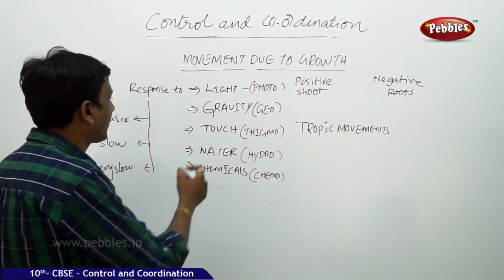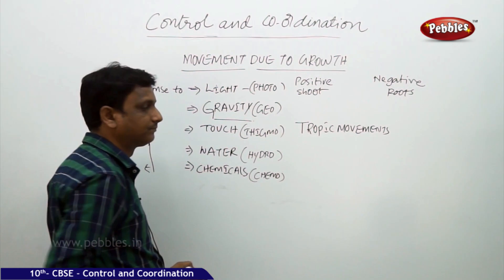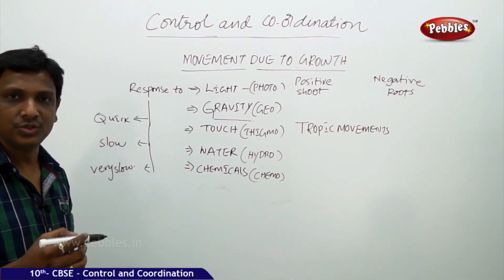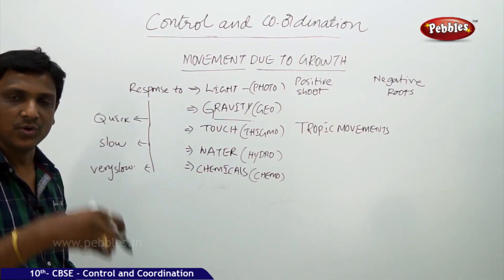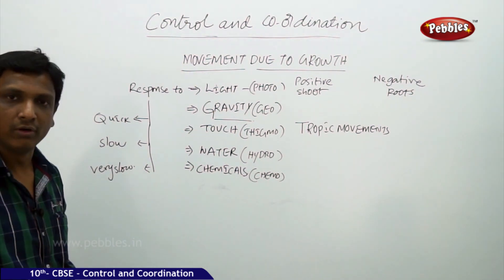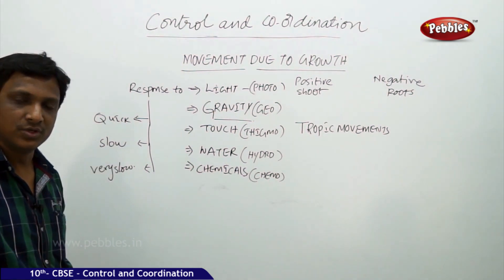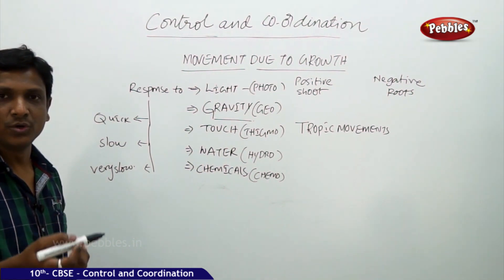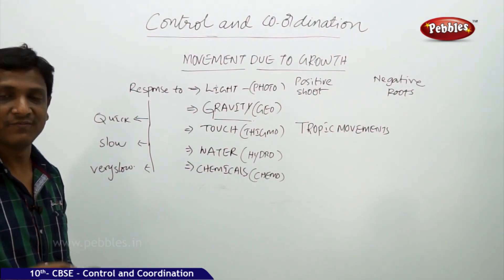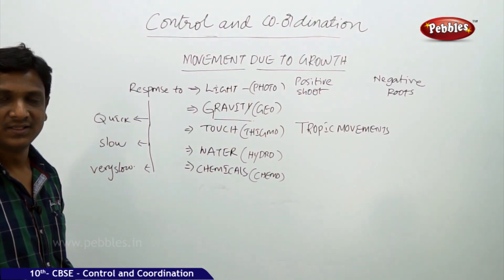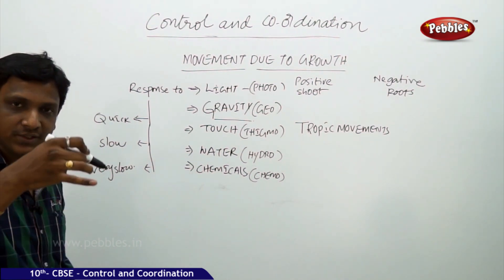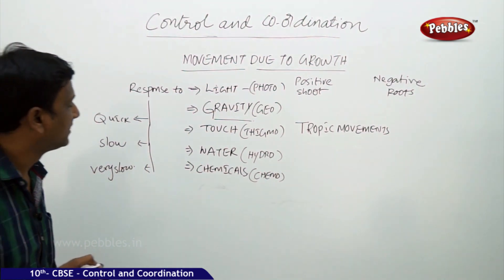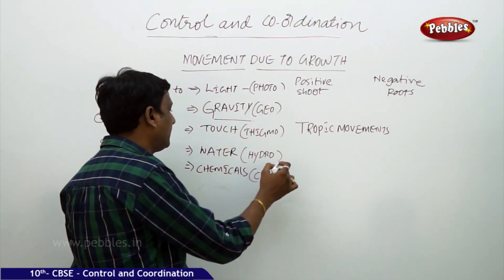The second tropism is geotropism, which is the response to gravity or the earth. The roots always grow towards the earth — they grow downward. The shoot grows away from the earth. So the shoot shows negative geotropism, away from the earth, while the roots show positive geotropism, moving towards the earth.